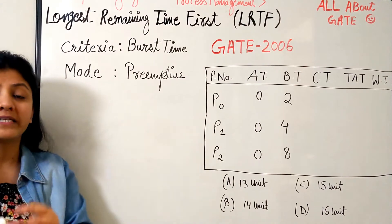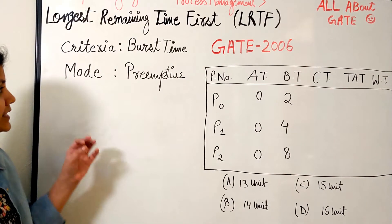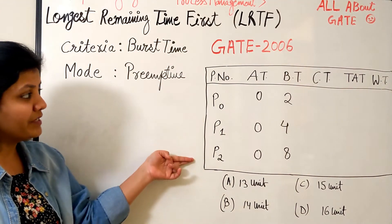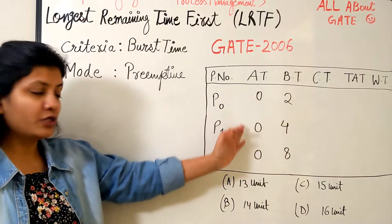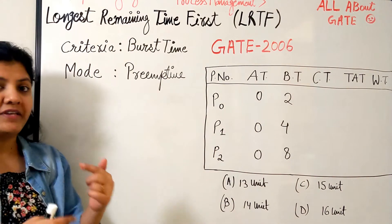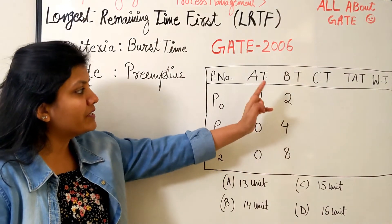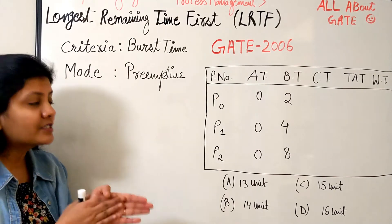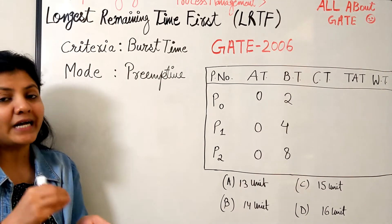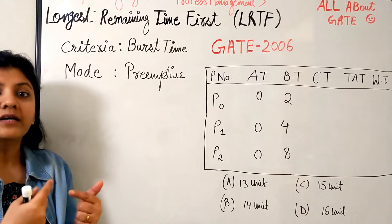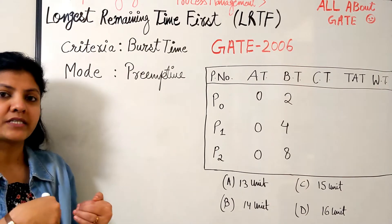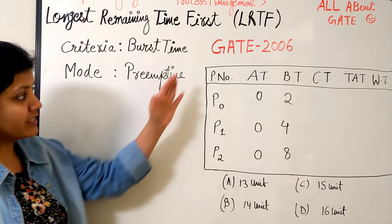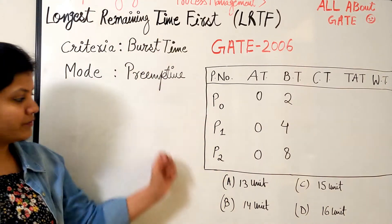The question simply says that we have a system where we have three processes P0, P1, and P2. Their respective arrival times are 0, 0, 0, so all three processes are arriving at time 0. Their respective burst time requirements are 2, 4, and 8 units. We are implementing the Longest Remaining Time First algorithm, and whenever there is a tie between two processes, it is broken by the lower process ID. So whichever process ID is lower will get the chance first if the tie is present.